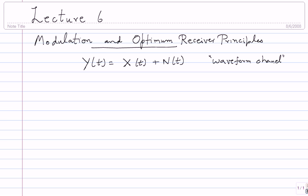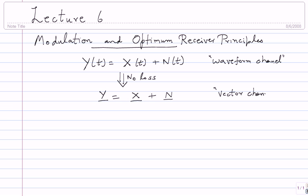While the waveform channel is a powerful model, it's not clear how the receiver should react to a waveform. Vectors are much easier. So we will spend this lecture converting this waveform channel — with no loss of information about the bits being carried in x(t) — into a vector channel, which I write as Y = X + N. This vector channel is mathematically and practically much easier to deal with: you can save a vector in a computer, process it, design with it. This is a very powerful simplification at the heart of digital communication.